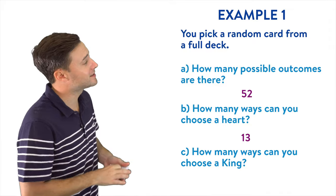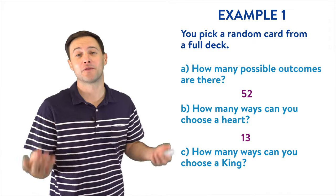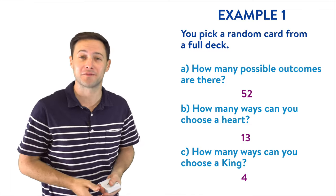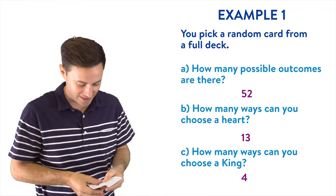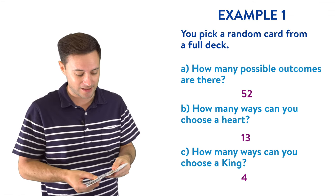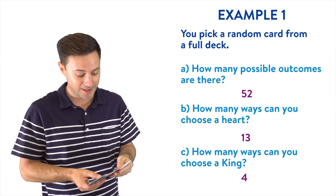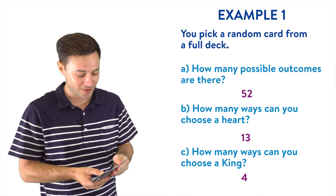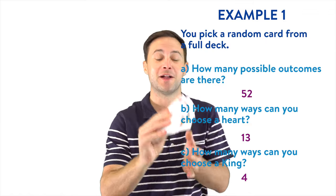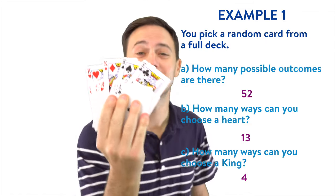Alright, part C: how many ways can you choose a king? Well, if you remember, there are four different suits, which means there are four different kings. There is the king of clubs, there's the king of spades, there is the king of diamonds, and there's also obviously the king of hearts. So those are your four ways to get a king.